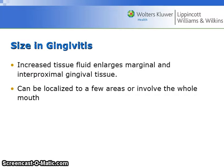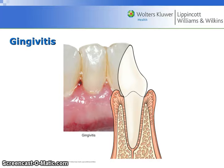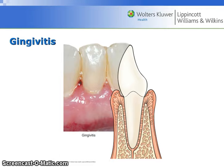Increased tissue fluid enlarges marginal and interproximal gingival tissue. Inflammation can be localized to a few areas or be generalized throughout the whole mouth. The tissue swelling in gingivitis may cause the position of the gingival margin to move coronally, further above the CEJ than in health. There is no destruction of periodontal ligament fibers or alveolar bone in gingivitis. See figure 13.12 on page 230.